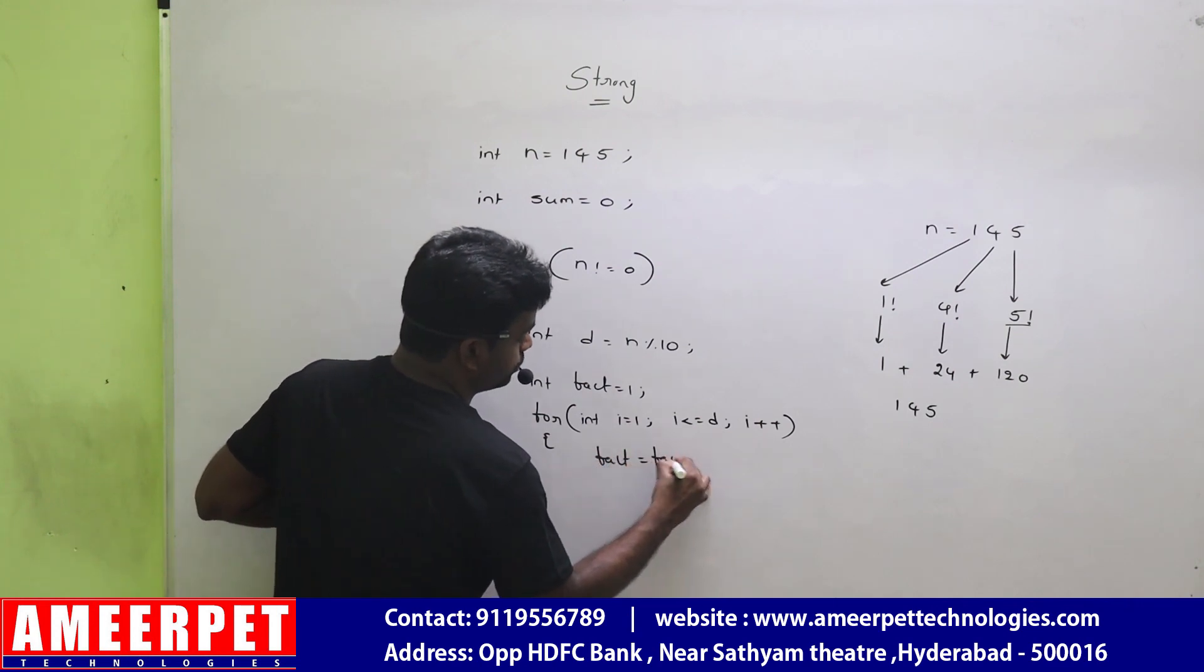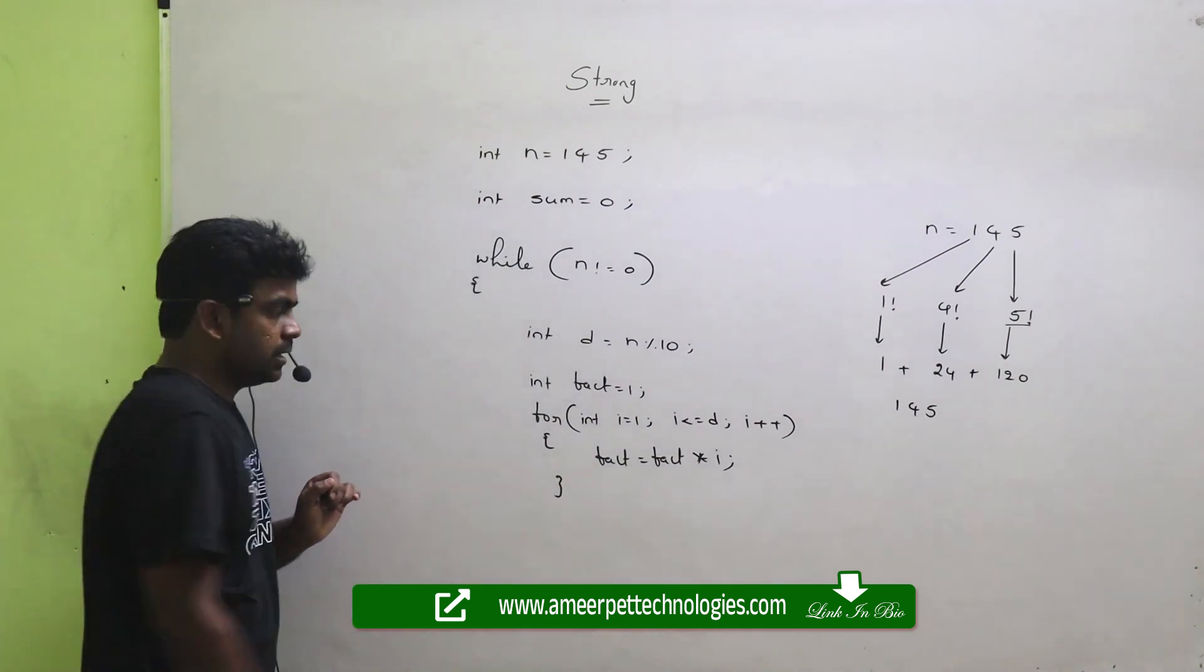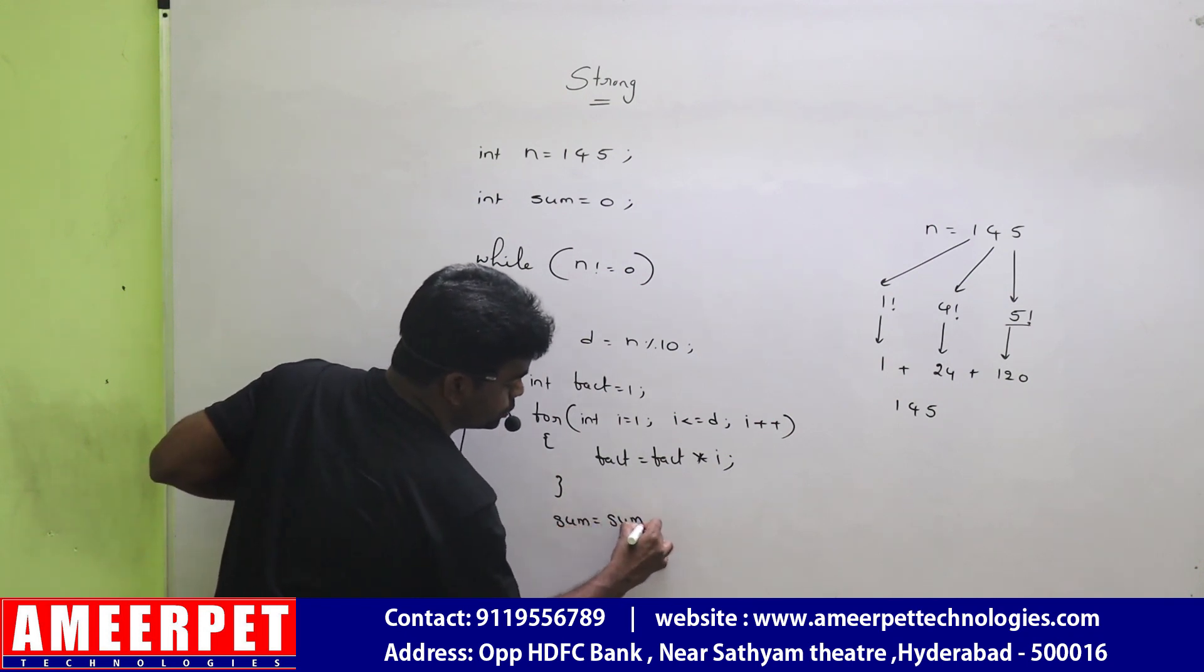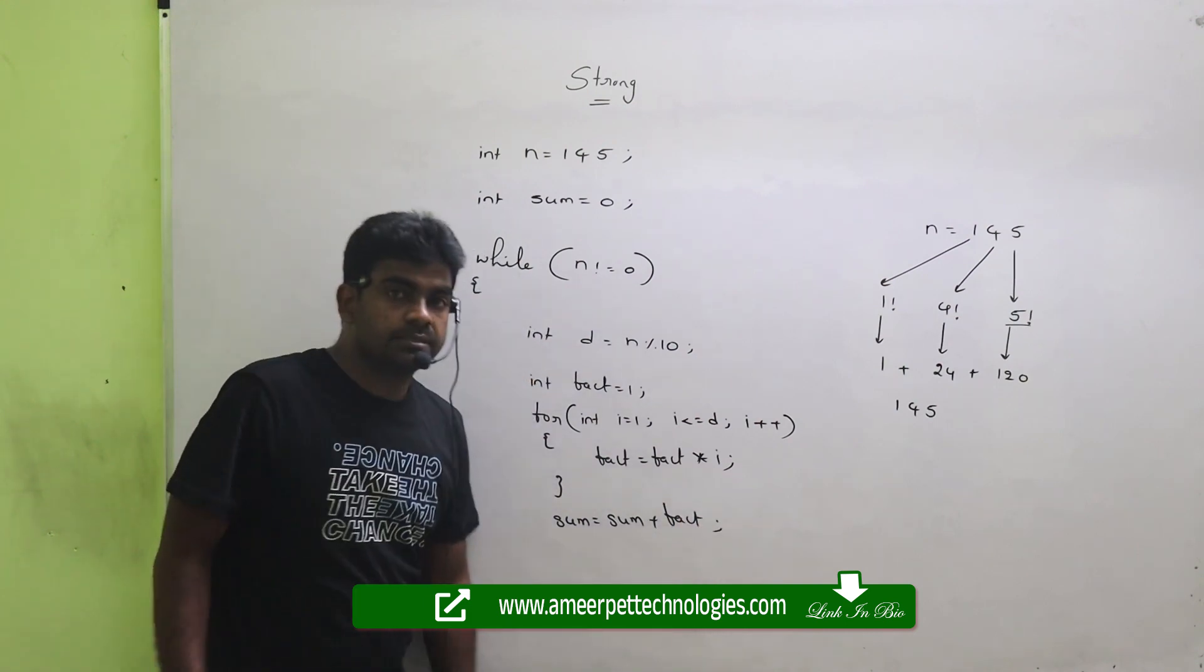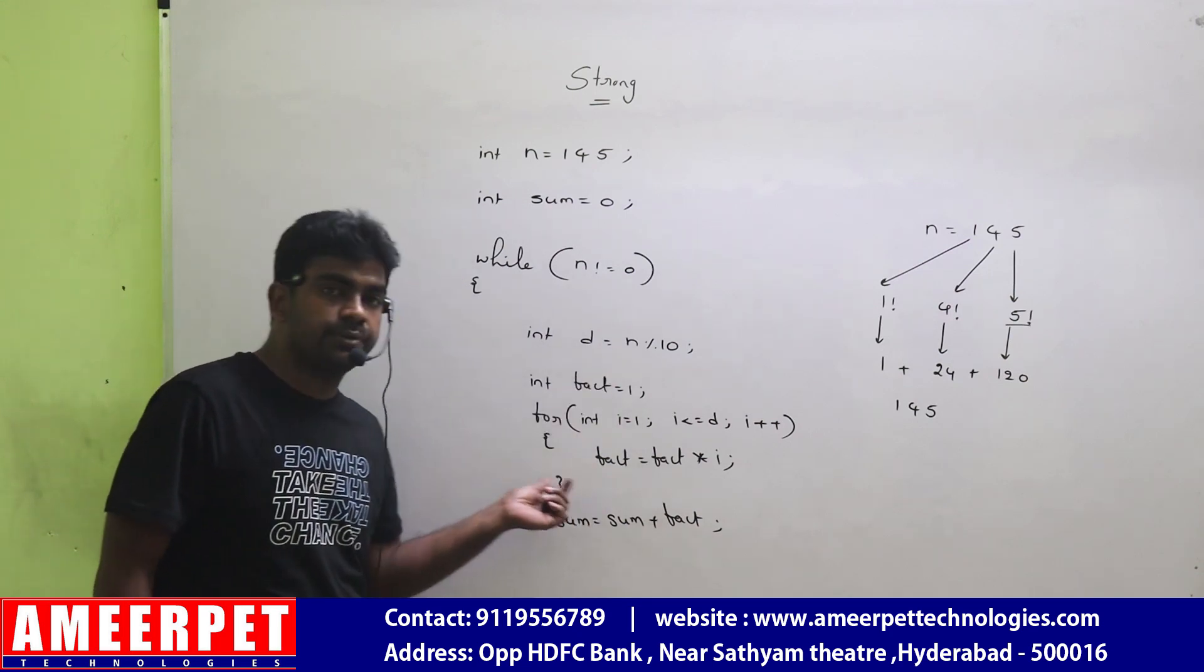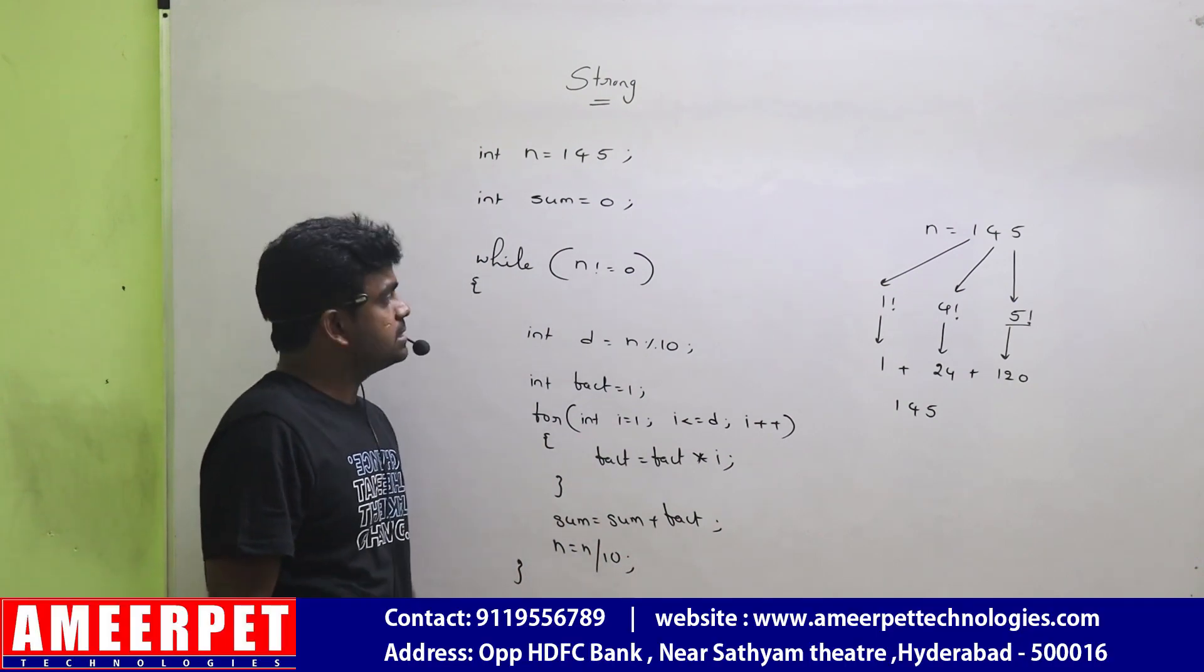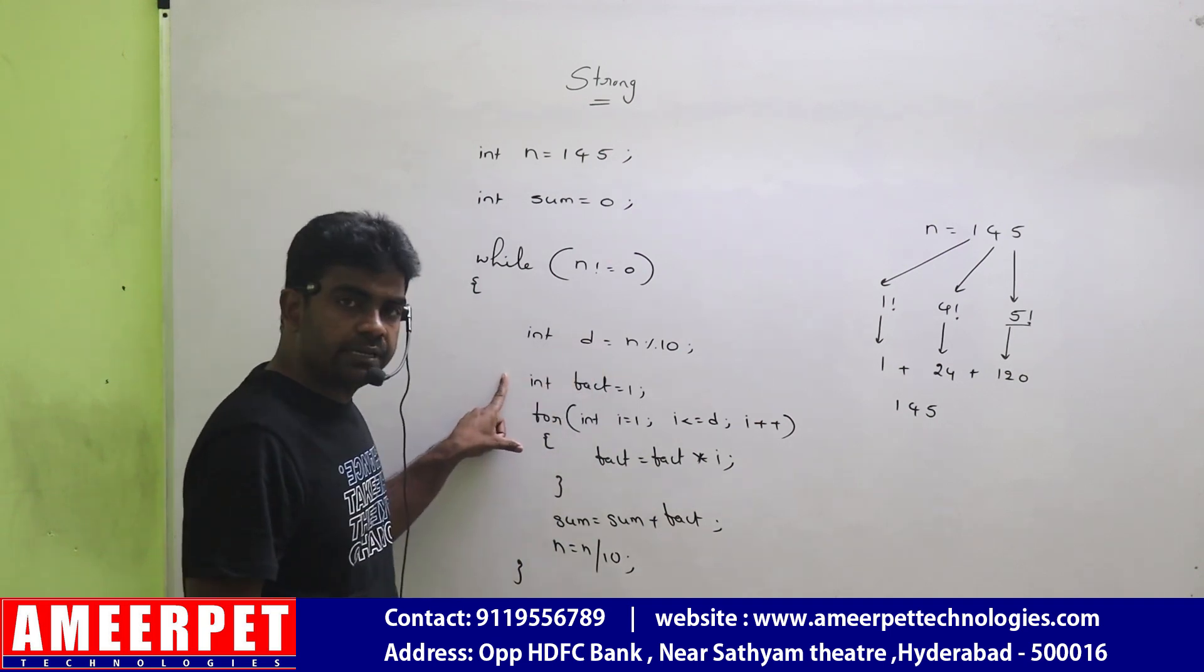After this, what we are doing? We are adding that factorial to the sum: sum equals to sum plus fact. So after finding this, we are removing that digit by doing n equals to n divided by 10. So this is the logic: getting the digit, finding the factorial for that digit, adding that factorial value to the sum, and removing that digit.